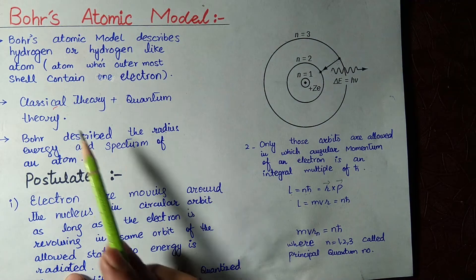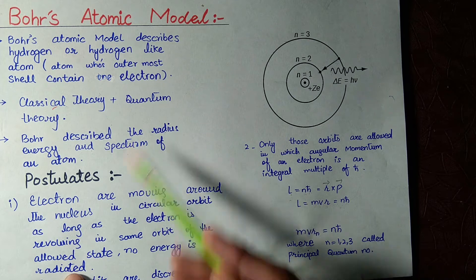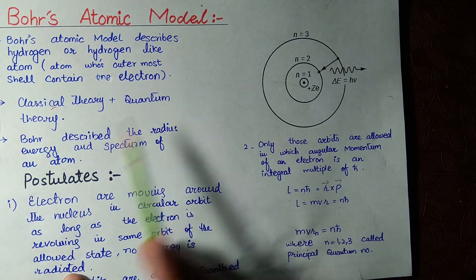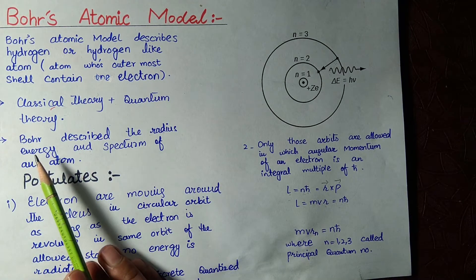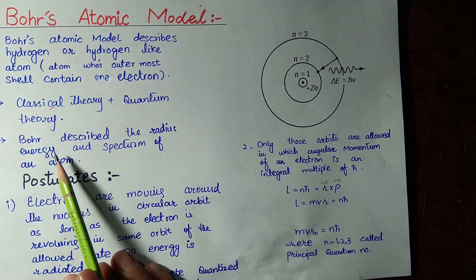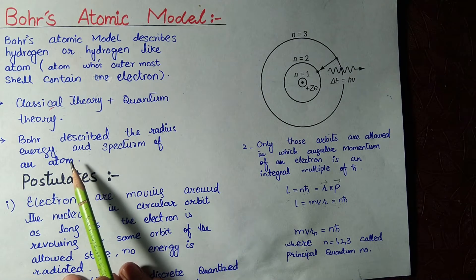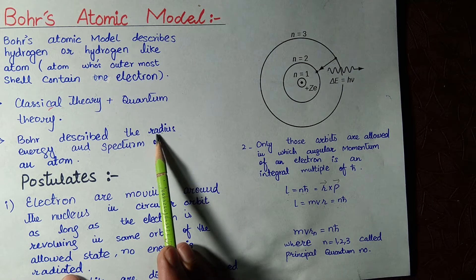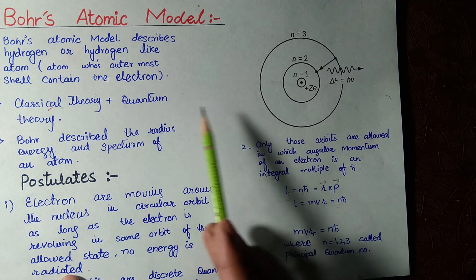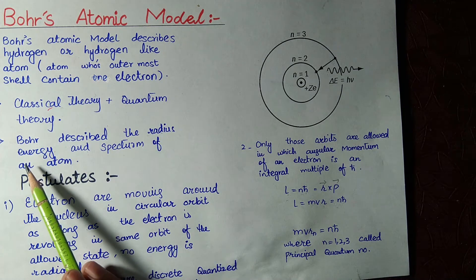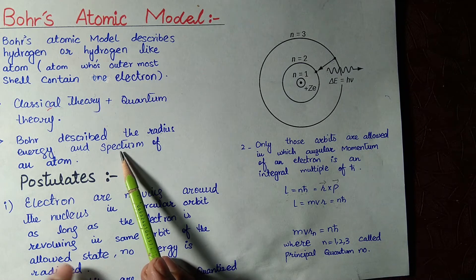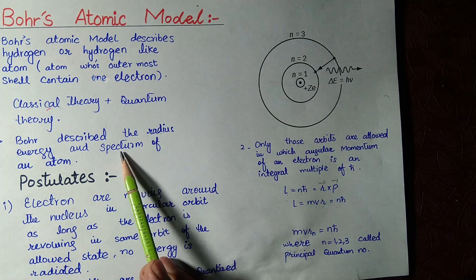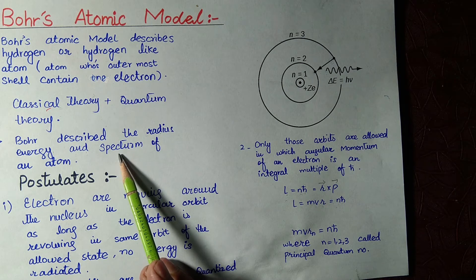Some of Bohr's postulates are classical while some are quantum — I will point out which is which as we discuss them. Bohr's model describes the radius, energy, and spectrum of the atom. The Bohr radius and the quantization of radius both tell us that the radius and energy of an atom are quantized things. We will also discuss the hydrogen spectrum and the Rydberg constant.